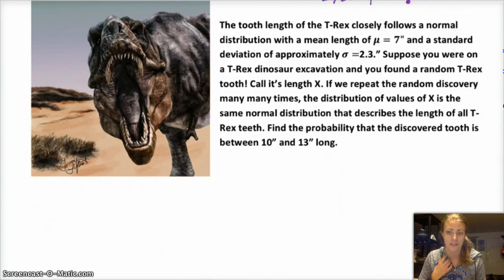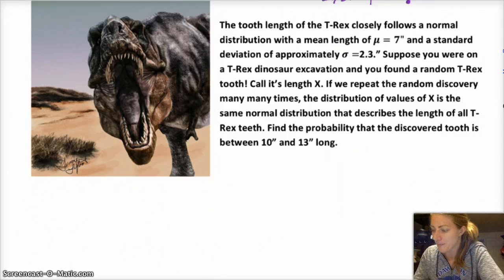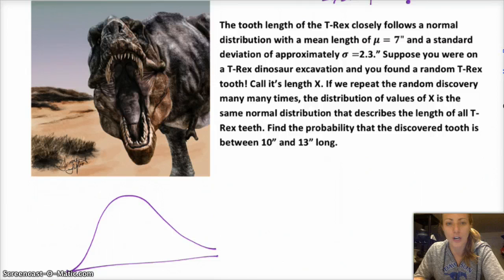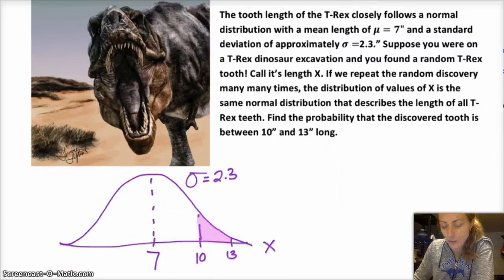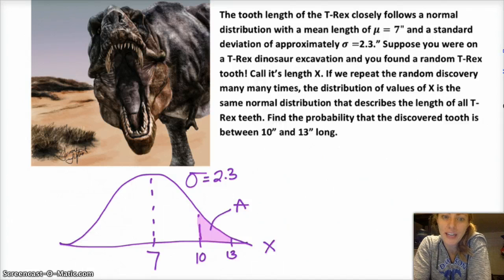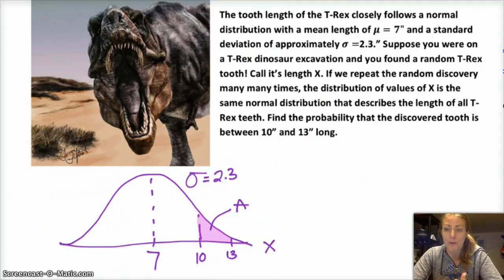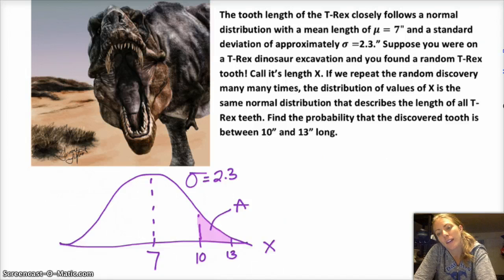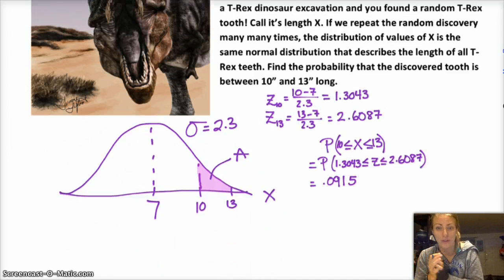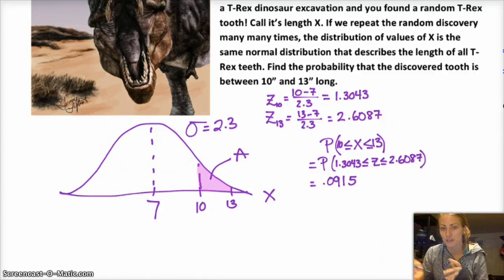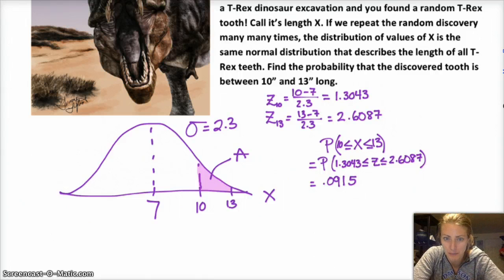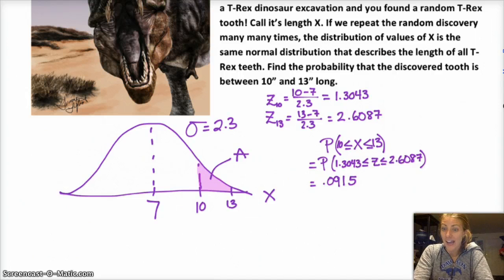Find the probability that the discovered tooth is between 10 and 13 inches long. This is a simple normal curve probability problem. So if it helps, you can draw your normal curve with the mean and standard deviation, and then I recommend shading the area that you want. So you want to find the area corresponding to that, and that will get you your probability. So find the z-scores of 10 and 13, and then you can use your table or your normal CDF on your calculator to find the probability. You use your table or your normal CDF, and you should get that the probability of the tooth being between 10 and 13 inches is about 0.09. So yeah, that's cool. Okay, bye!